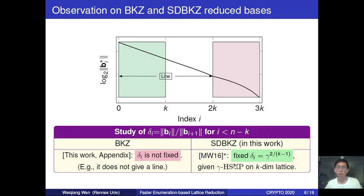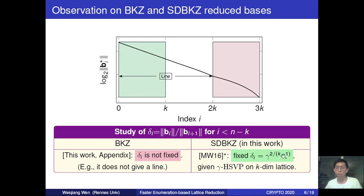In this work, we consider a slightly different variant: we replace the underlying SVP solver with an approximate Hermit SVP solver of the same size. If you run SDBKZ with an approximate Hermit SVP solver of size k, you again obtain a straight line outside the last block. We also know the slope of this line equals the square of the root Hermit factor achieved by the given approximate Hermit SVP solver.